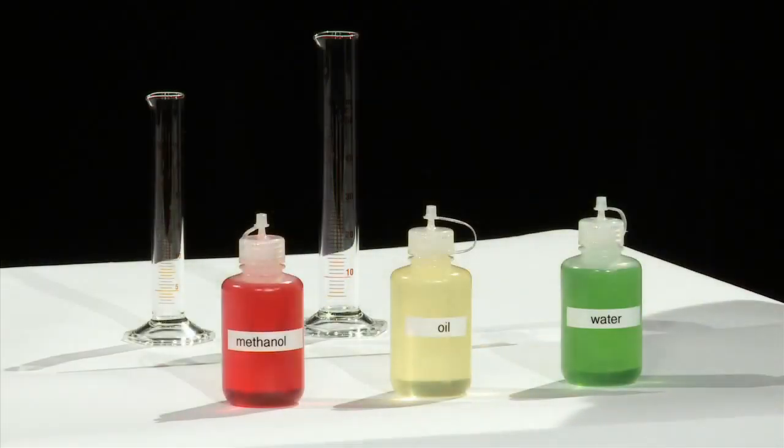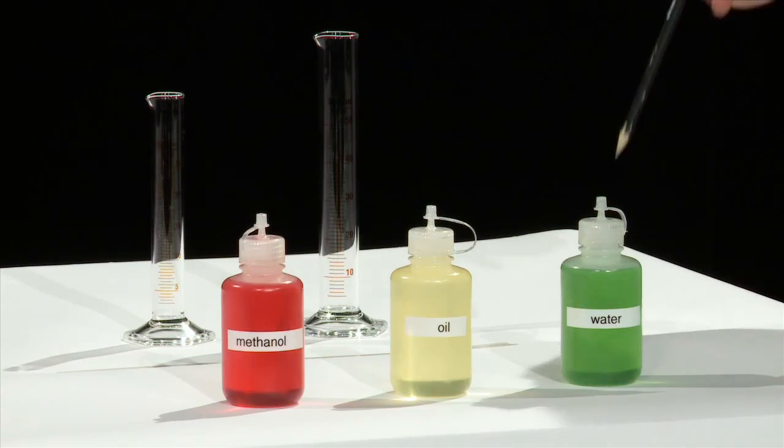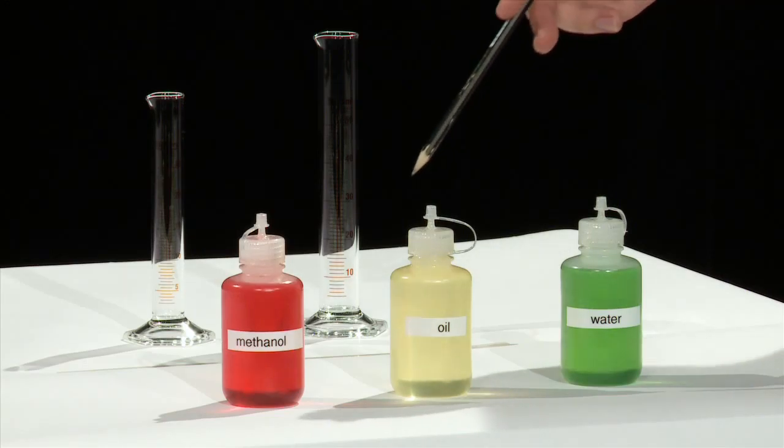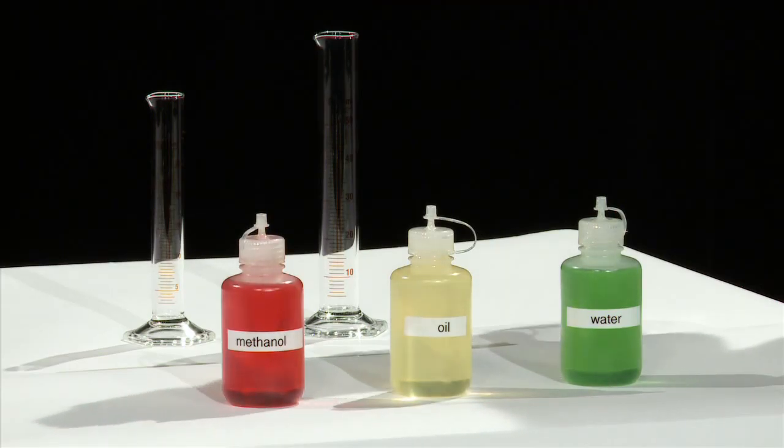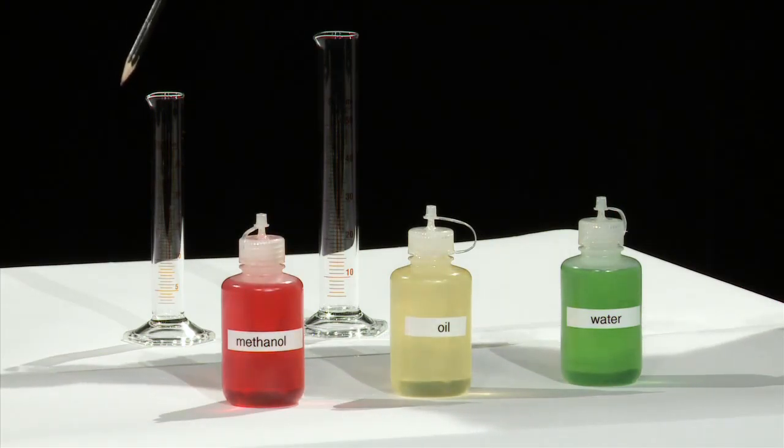For this experiment you will need a bottle of water with some added food coloring, a bottle of oil, and a bottle of methanol with a different color of food coloring. You'll also need a 50 ml measuring cylinder and a 25 ml measuring cylinder.